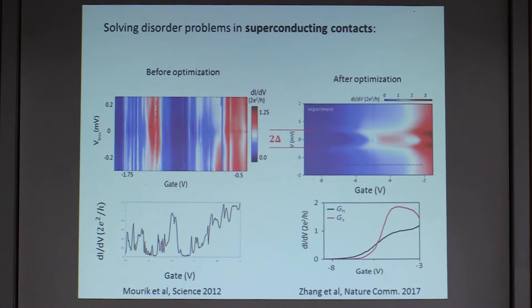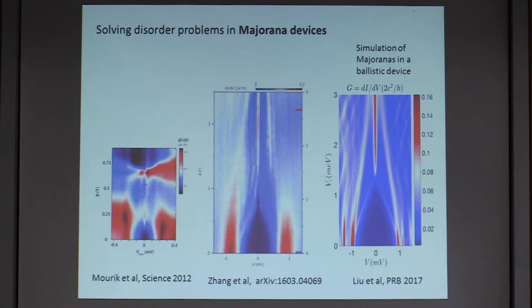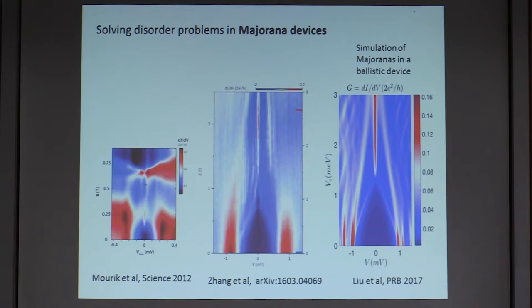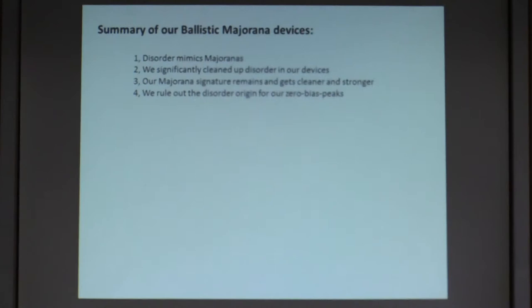The same improvement applies to the superconductor contact — replacing one normal contact with a superconductor contact. In the first generation device there were many conductance resonances and no plateau, while in the second generation after chemical cleaning, we resolve a quantized conductance at 2e²/h with no resonances, indicating we cleaned up the disorder significantly. Now applying a magnetic field and chemical potential, we find the gap closes and forms a very robust, stable zero-bias peak — the signature is actually cleaner than before, and consistent with a simulation from the Maryland group assuming no disorder.